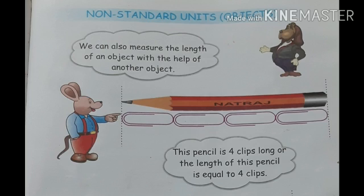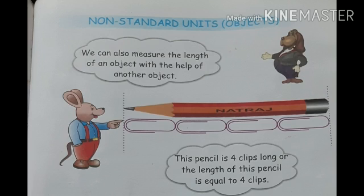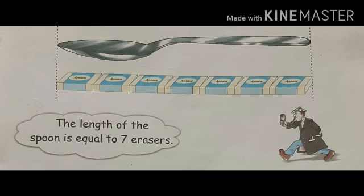Now we will learn non-standard units using objects. We can also measure the length of an object with the help of another object. Here we are measuring the length of a pencil using clips — this pencil is four clips long; the length of the pencil is equal to four clips. Now we are measuring the length of a spoon using erasers — the length of the spoon is equal to seven erasers. You can also measure your toothbrush and your comb with the help of erasers and find their length.